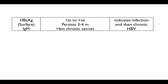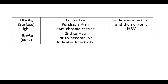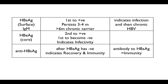The virology for hepatitis B: the surface antigen (HBsAg) is the first to become positive, persists for 3–4 months, and if positive for longer than 6 months it indicates chronic carrier status. The core antigen is second to become positive and first to become negative. Anti-HB surface antigen means that you have recovered and have a degree of immunity, once you have cleared the surface antigen and developed antibodies to it.